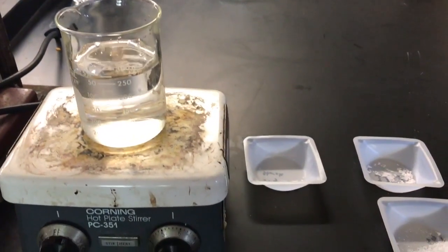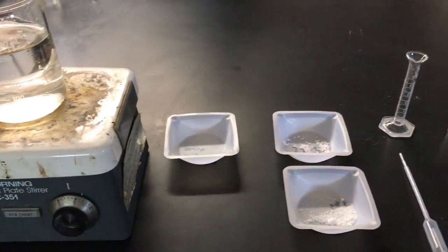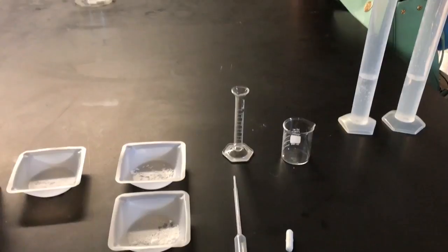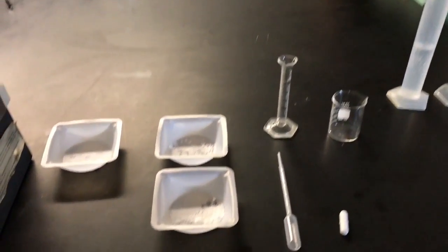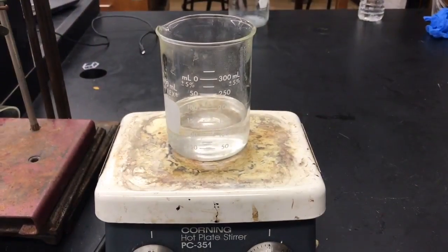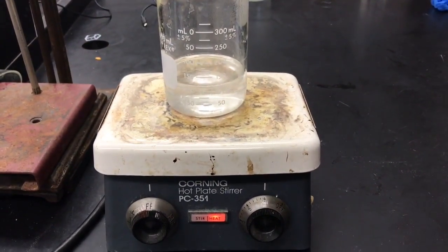Now we begin the part of this experiment where we have to measure out soluble starch and add it to boiling water. Here we have all the materials we will need including malonic acid, soluble starch, and manganese sulfate monohydrate. First, we begin by boiling 100 milliliters of distilled water.